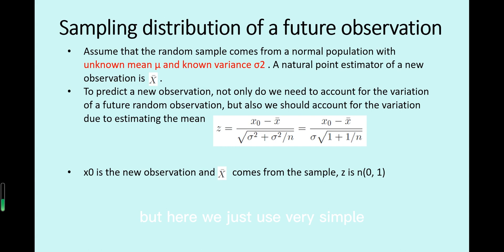But here we just use a very simple case where you want to estimate a population mean first and you have known the variance of a population. So in this case which is called you have unknown mean μ but you have known the variance. So how to estimate, how to get a future observation.